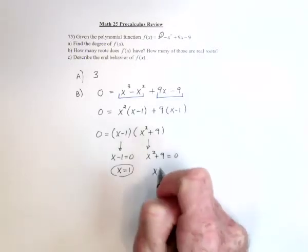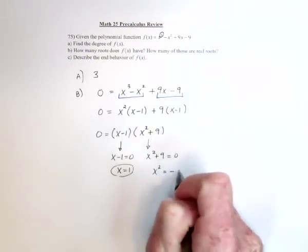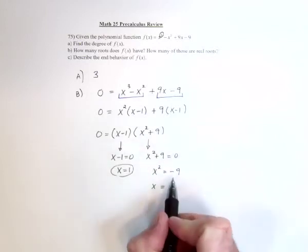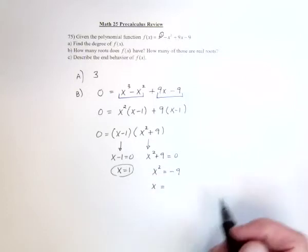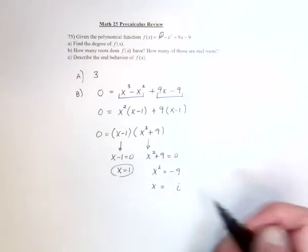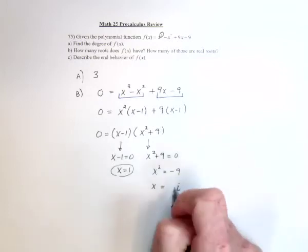If you finish this one, we'd have x squared equals negative 9. Take the square root of both sides and the square root of negative 9. Well, because it's the square root of a negative, then that's imaginary numbers.